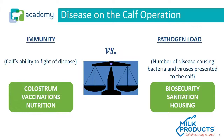On the immunity side, we typically think in terms of colostrum, at least in the very young calf. Nutrition is a major factor, and being able to use a successful vaccination program is also a key piece of the immunity side of the balance.